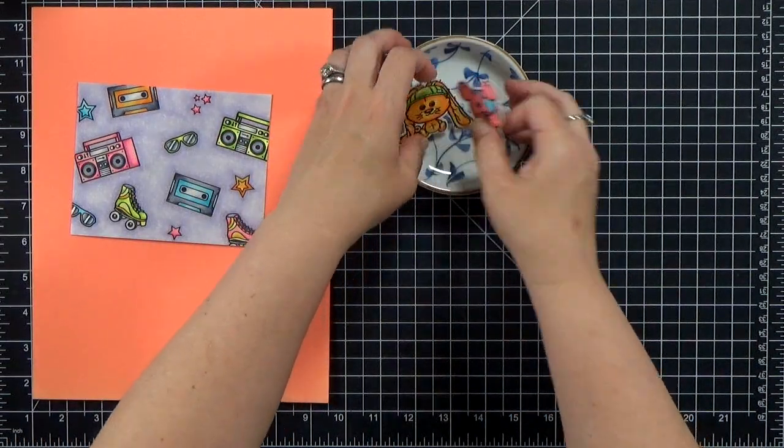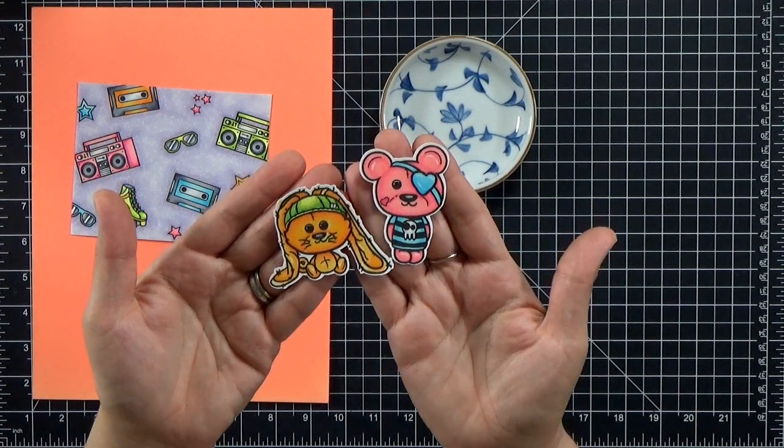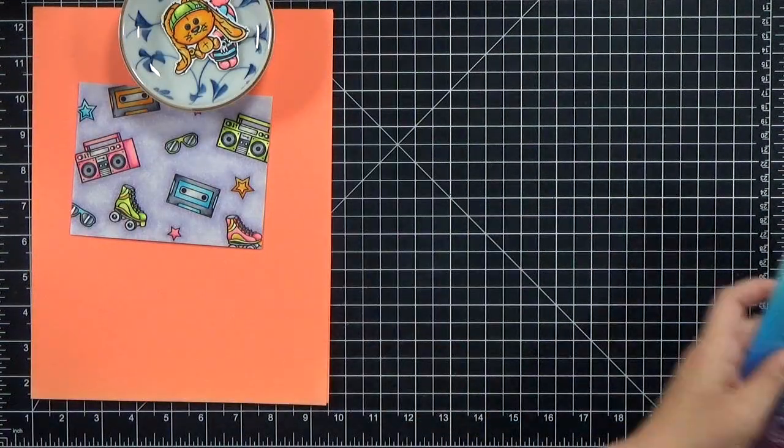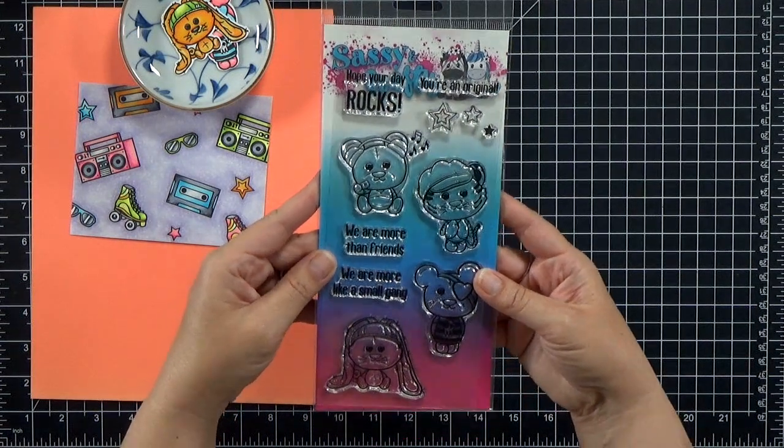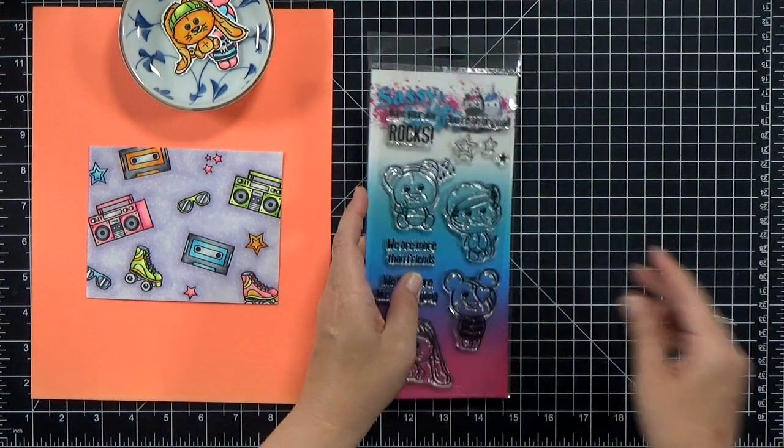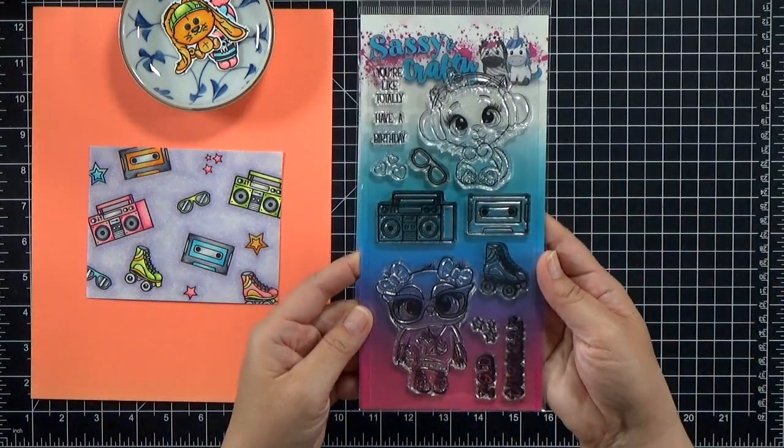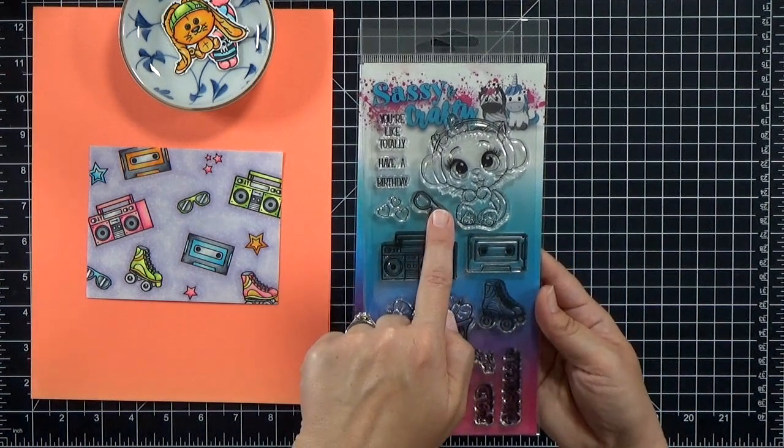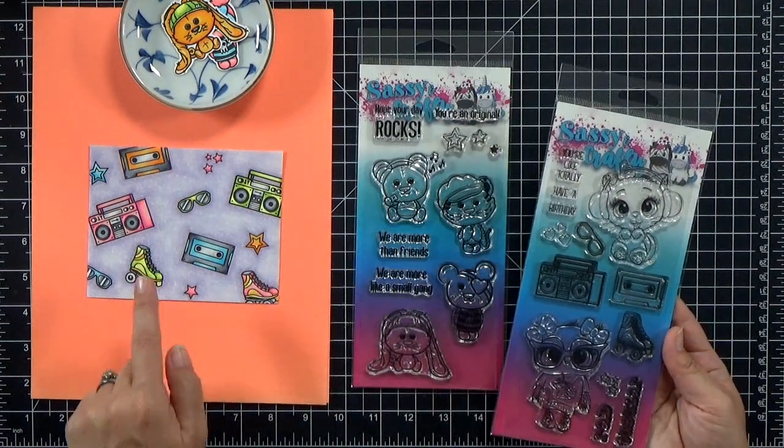So I have gone ahead and I have stamped and I have cut out two little critters and a background and I Copic colored all of those. These are new sets, new stamp sets from Sassy and Crafty. I've got those all listed down below. Aren't these fun? They're super cute. They're like 80s themed and I've been having a lot of fun coloring them.